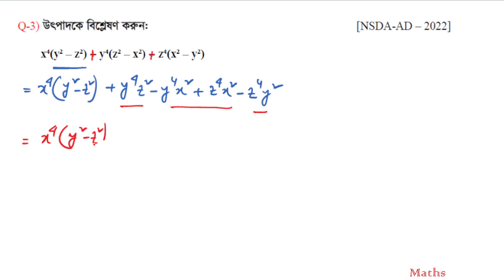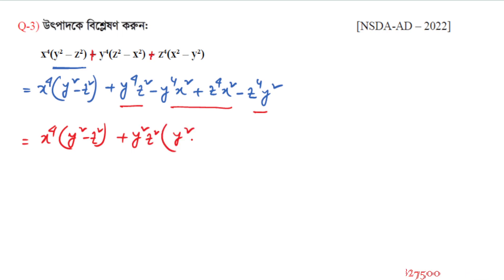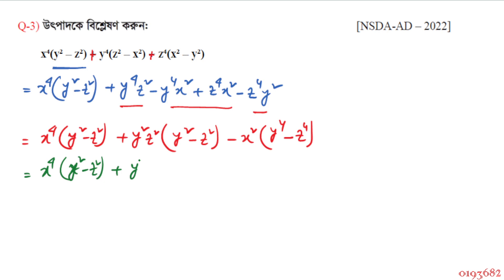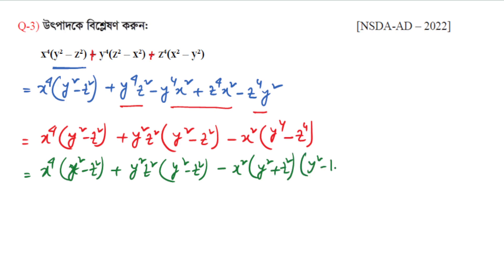Taking common factors: (y² − z²) is common in some terms, and x² is also a common factor. We extract minus x² as common, leaving y⁴ − z⁴. Now y⁴ − z⁴ is a difference of squares: (y²)² − (z²)² = (y² + z²)(y² − z²). So we have y squared plus z squared times y squared minus z squared.